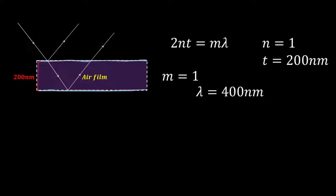Since the film is air, n equals 1, the thickness is about 200 nm, and so if I put m equals 1, I am looking at the first maxima, and that happens for lambda equals 400 nm, which is, if you guessed it, blue.